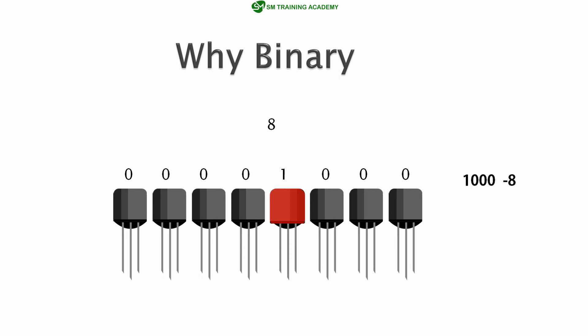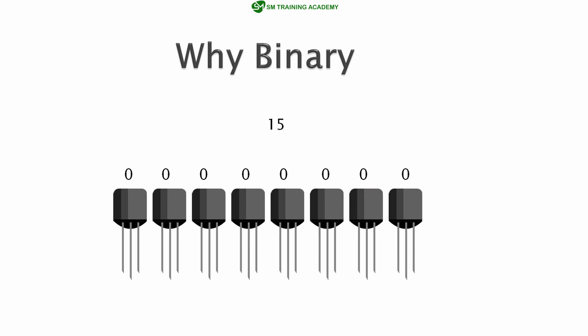We know 8 in binary is 1000. So for representing the number 8 we write 00001000. For the number 10 we write 00001010 — turning on the second and fourth transistors from the right represents 10. If we want to represent 15, we turn on the 4 transistors from the right, giving us 00001111, and that stores the value 15.